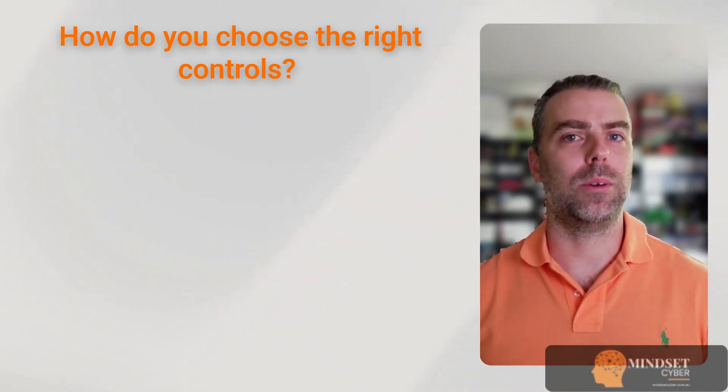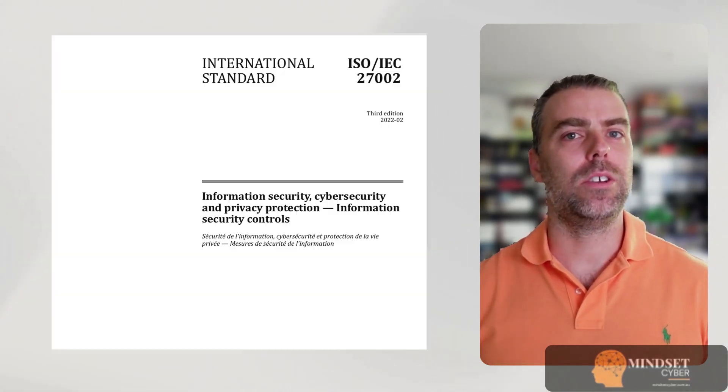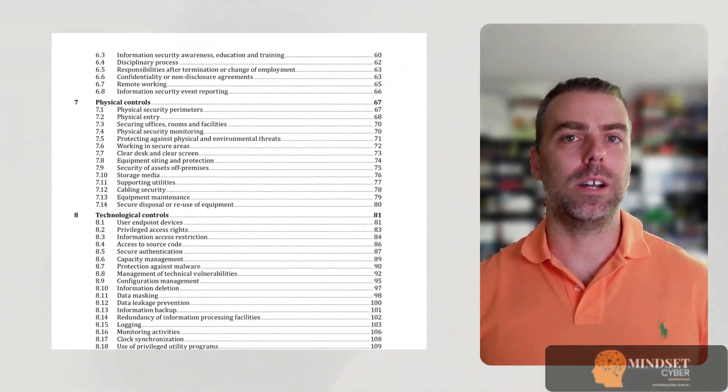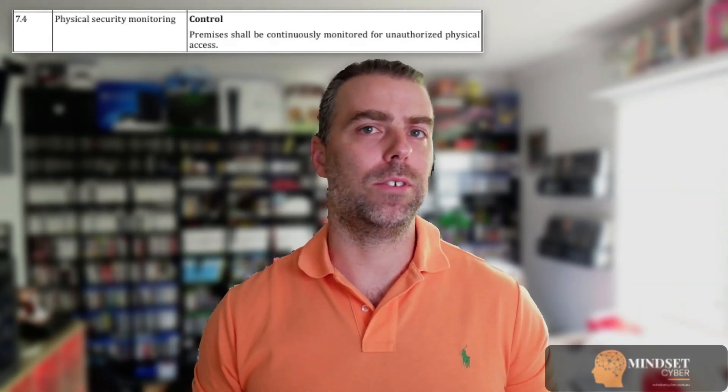Each control in Annex A is linked to a common security objective — things like protecting data in transit, managing user access, or detecting anomalies. To make sense of them, use the companion document ISO 27002, which explains each control in plain English with purpose, guidance, examples, and related threats and risks. For example: Annex A control 5.15 (access control) might apply to mitigate risks around unauthorised access to your HR platform. Annex A control 8.28 (secure coding) might be critical if you develop software internally, but not applicable if you don't. Annex A control 7.4 (physical entry controls) might only apply if you have office locations or a data centre. You're expected to justify what controls you've applied, which ones you've excluded and why, and whether each control has been implemented or not yet implemented. All of this goes into your statement of applicability.